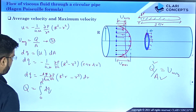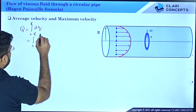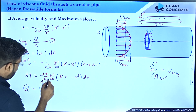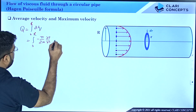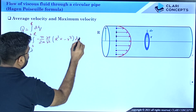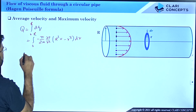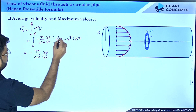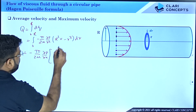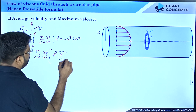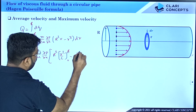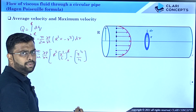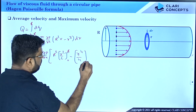So Q = −(π/2μ)(∂P/∂x) × ∫₀ᴿ (R²r − r³) dr. Performing the integration: ∫₀ᴿ R²r dr = R²(r²/2) evaluated from 0 to R = R⁴/2. And ∫₀ᴿ r³ dr = r⁴/4 evaluated from 0 to R = R⁴/4. When substituting the lower limit of 0, both terms vanish, so only the upper limit contributes.